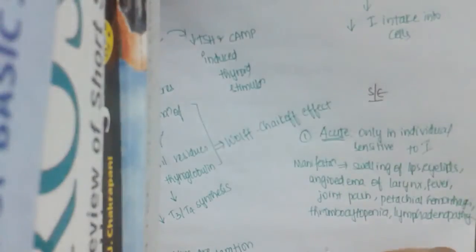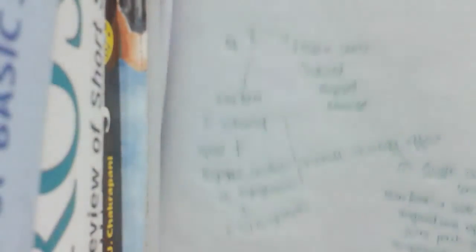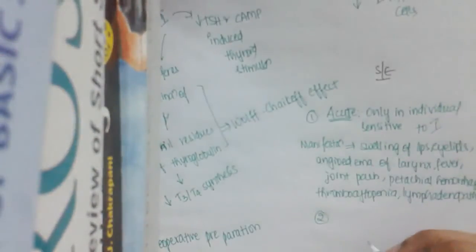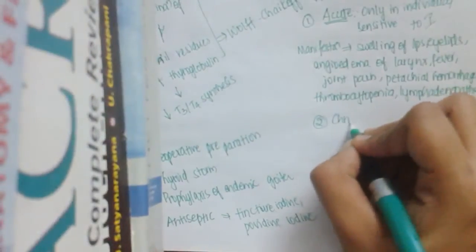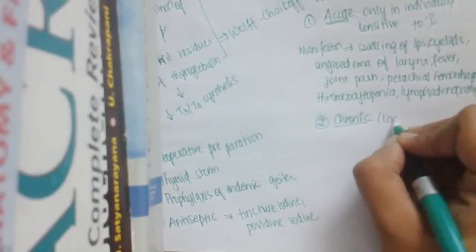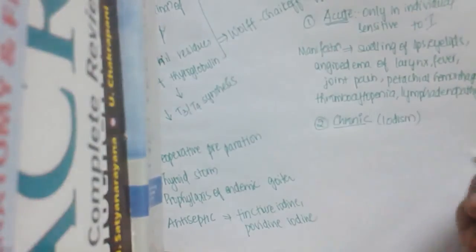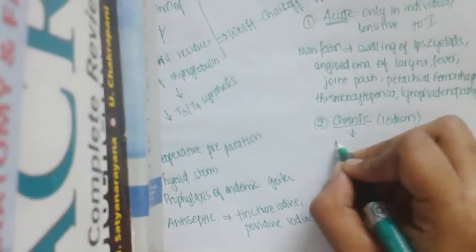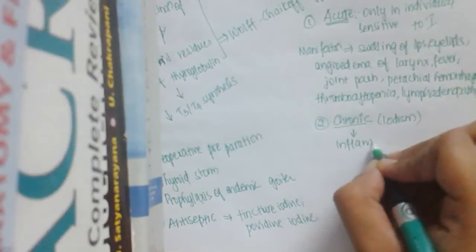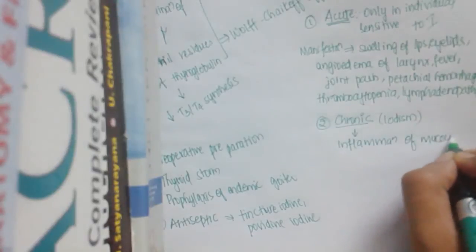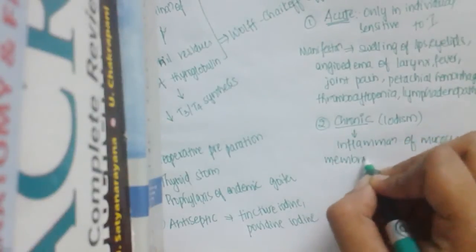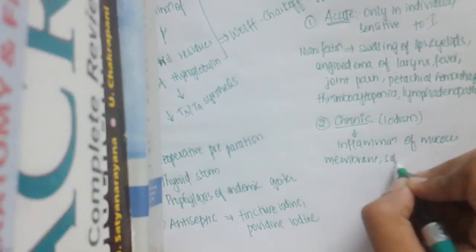The second type of side effect is chronic overdose, which is called iodism. Here we see inflammation of mucous membranes and salivation.